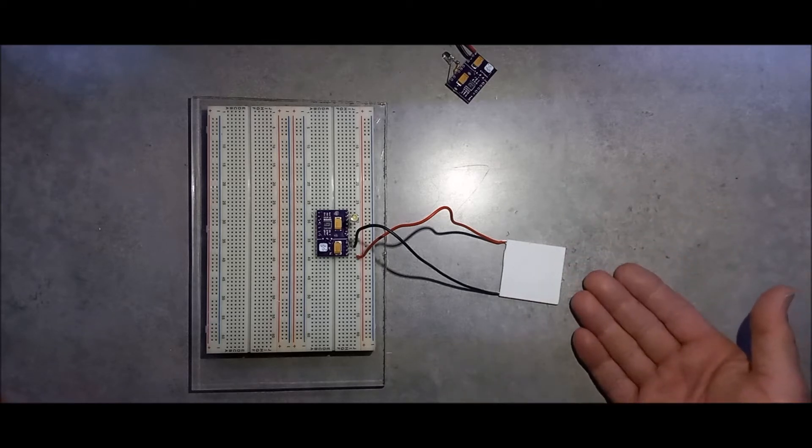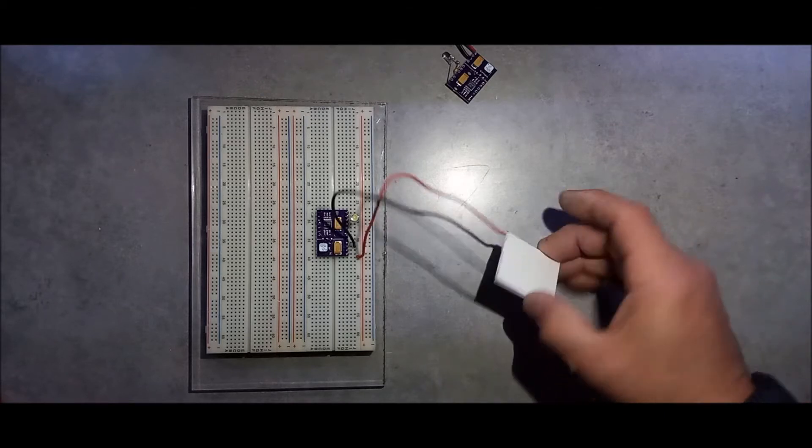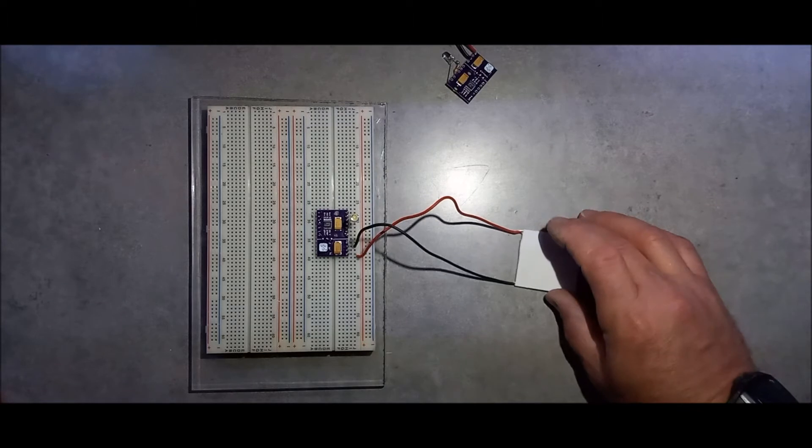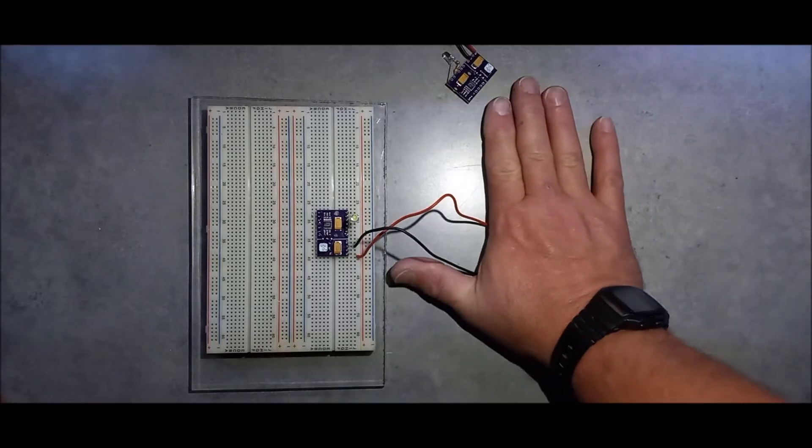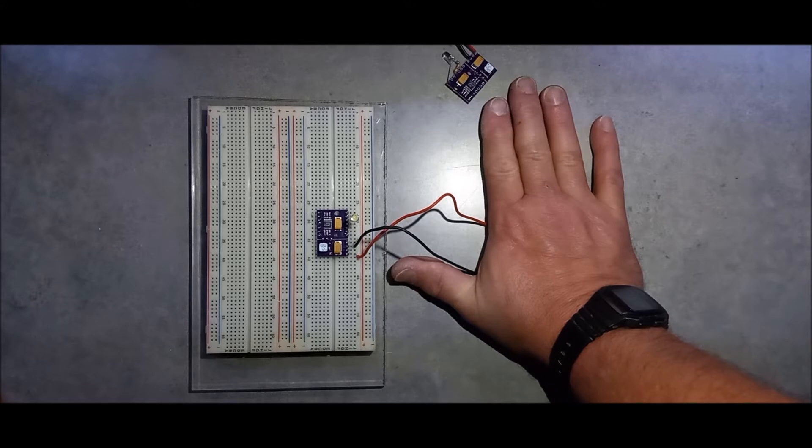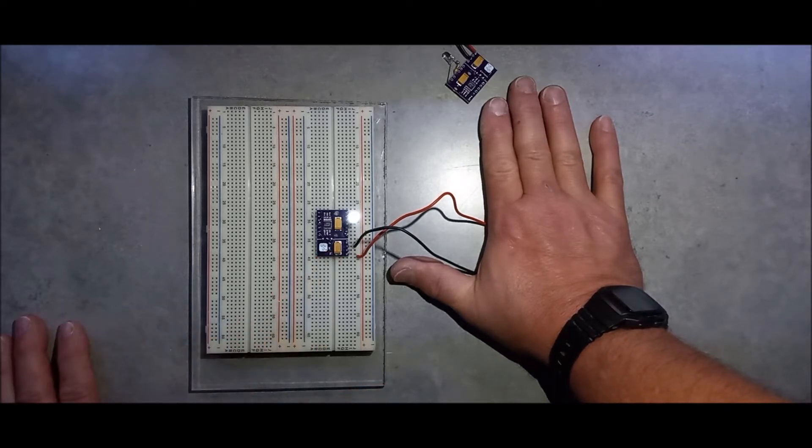You can put heat on one side of these and cool on the other, and they'll actually generate electricity. They're designed for things like refrigeration. If you apply power to them, they'll get hot on one side and cold on the other. But if you heat one side and cool the other, it will actually generate enough power to run this circuit.